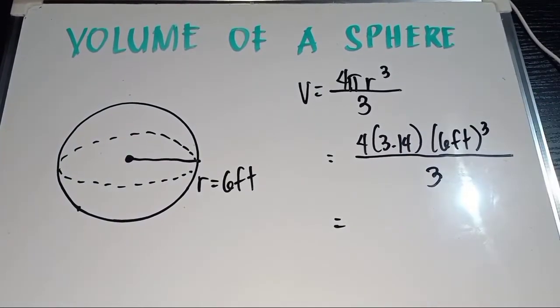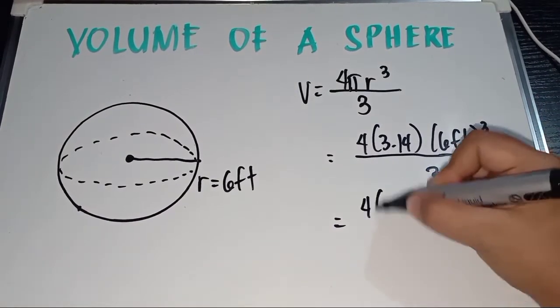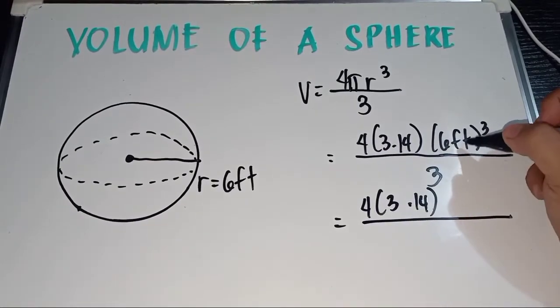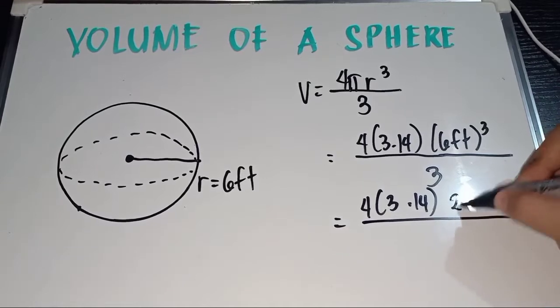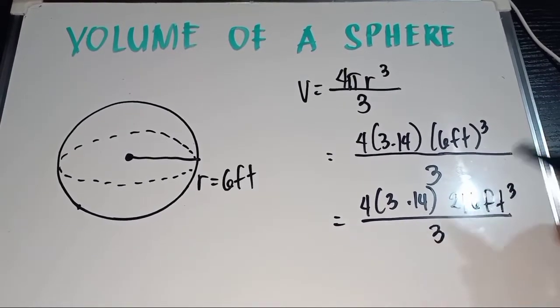4 times 3.14 times the value of 6 feet cubed. So, 4 times 3.14, 6 feet cubed, that is equal to 216 cubic feet all over 3.